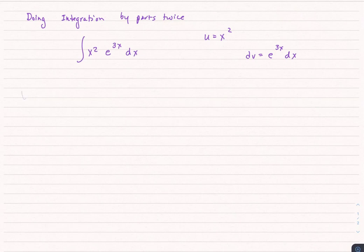Again, by LIPID. We're going to do the polynomial first. So u is equal to x squared. The dv is e to the 3x dx.